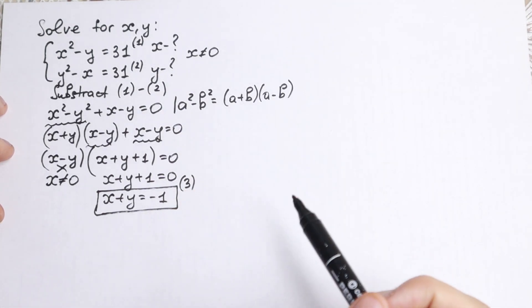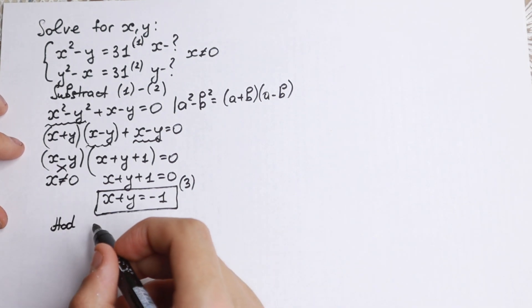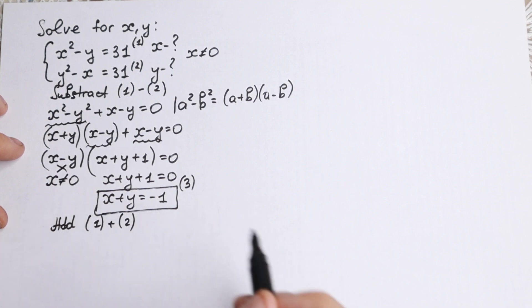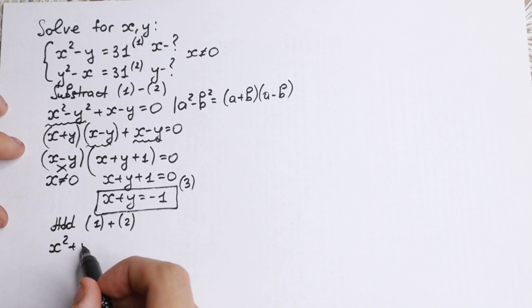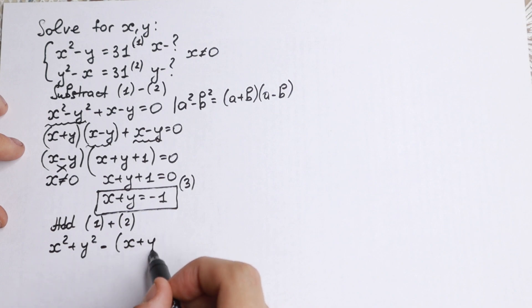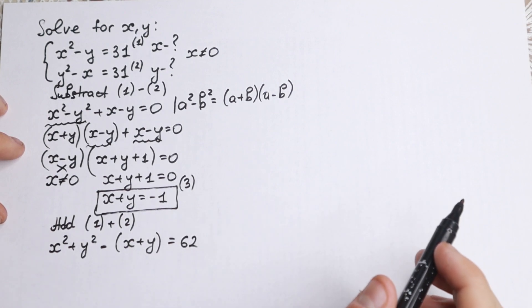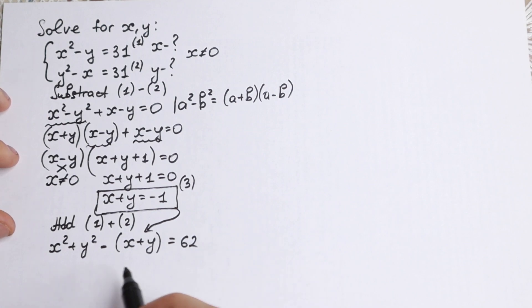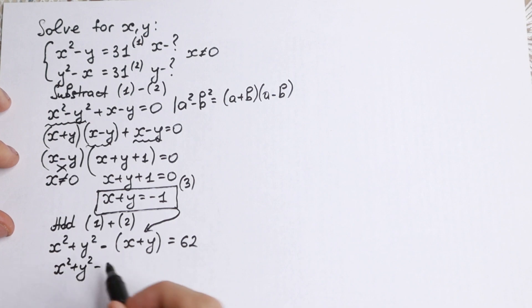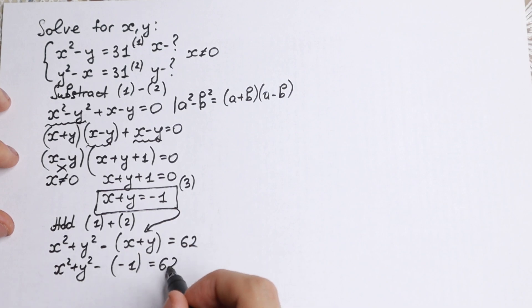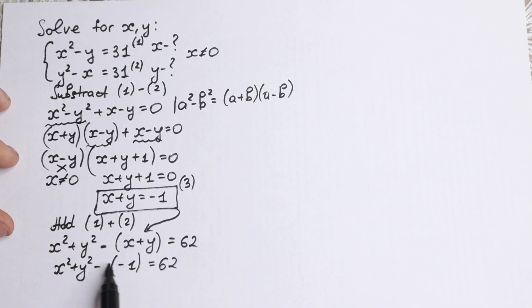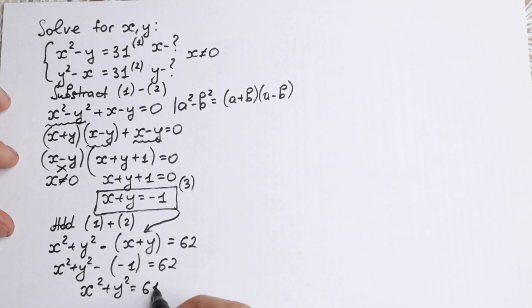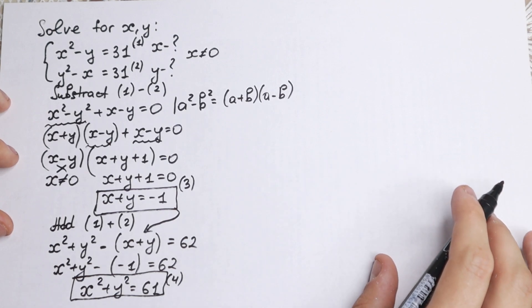Now let's add equation 1 plus equation 2. The result is x squared plus y squared minus (x + y) equal to 62. We know from equation 3 that x + y = −1, so we plug that in: x squared plus y squared minus (−1) = 62, which gives x squared plus y squared = 61. This is equation 4.